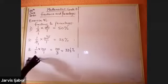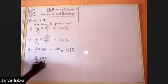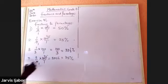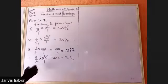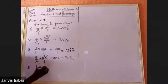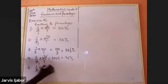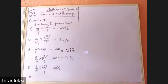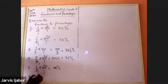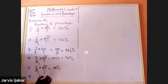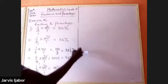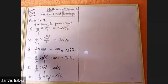Number four: 2 over 4 times 100 equals 50 percent. Number five: 1 over 5 times 100 equals 20 percent. Number six: 1 over 10 times 100 equals 10 percent.